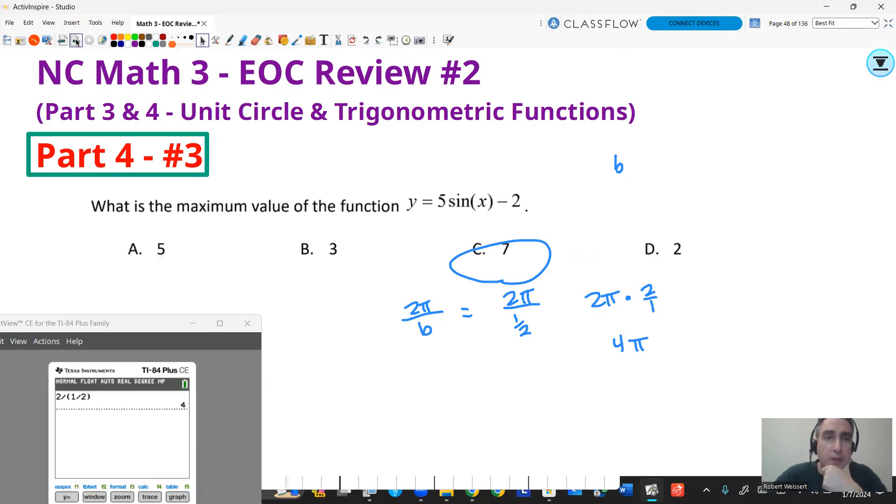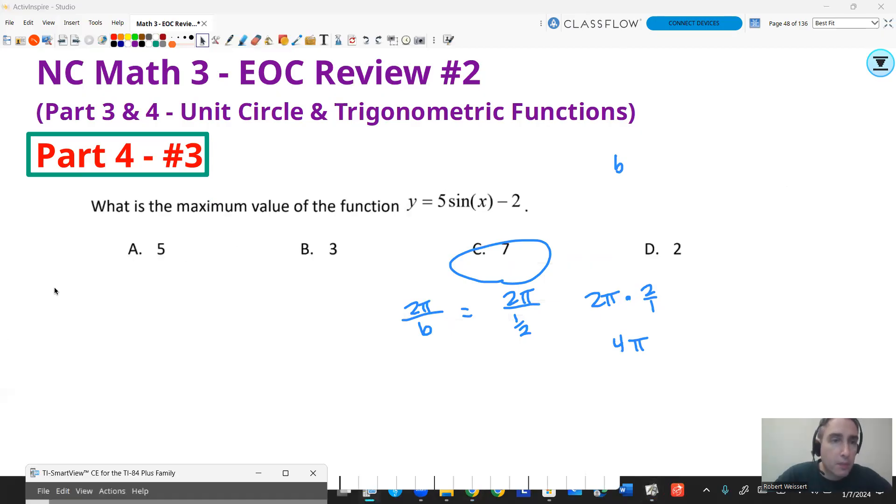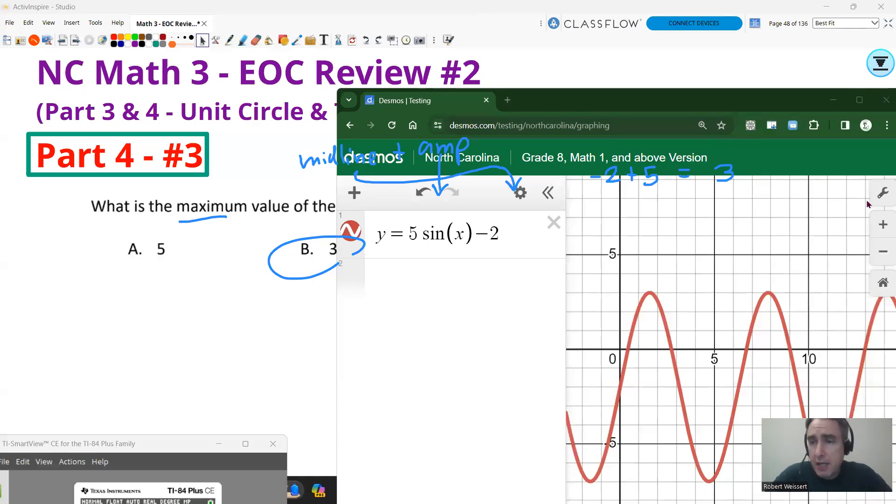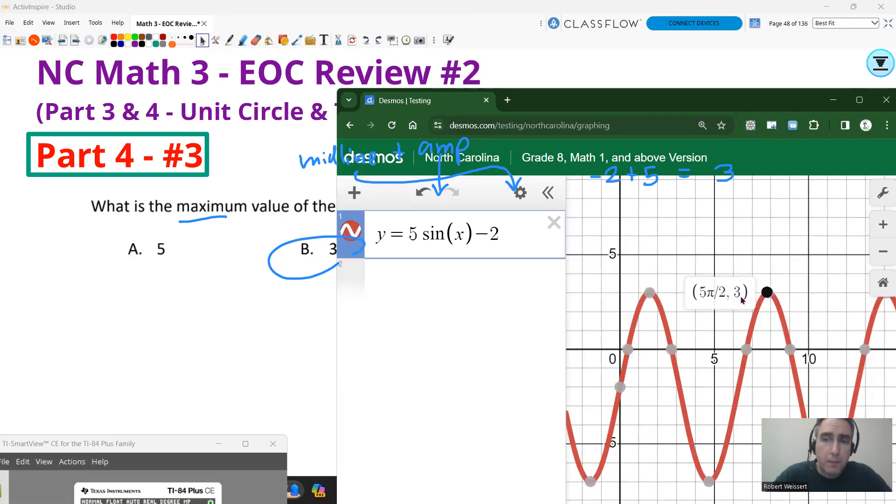All right, next question. I believe that's our last one. One more question and then we'll deal with function transformations in the last video for this review. This question here also can be graphed. I'll show you how to do it by hand first. So the maximum value of this function, the way to get your maximum value is just take your midline and add your amplitude. Now your midline is -2 and your amplitude is 5. So I can just literally take -2 + 5 and that'll give me 3. And that's going to be my max. If you graph it, just make sure you're in radian mode. Throw it in there. Click on the top. That y value is your maximum value, 3. Minimum would be -7. So 3 is your answer.